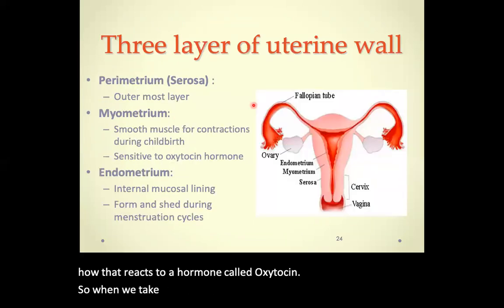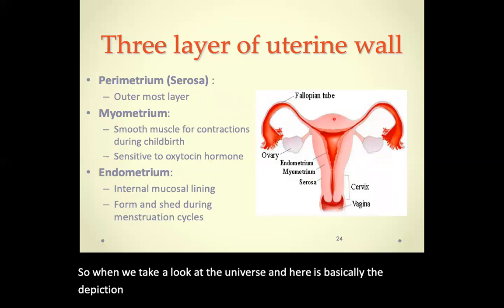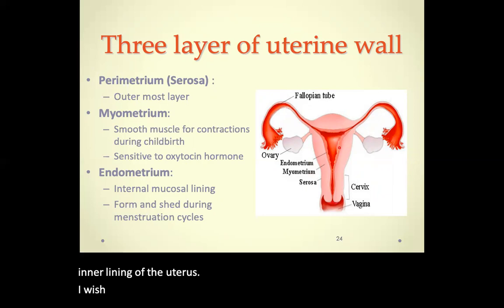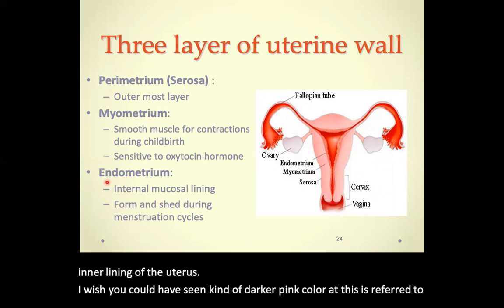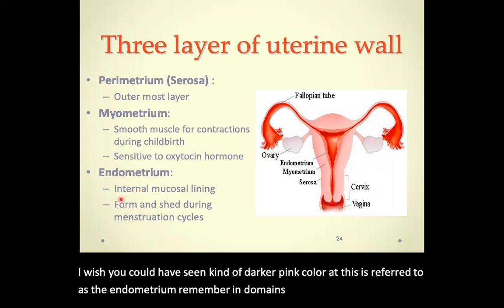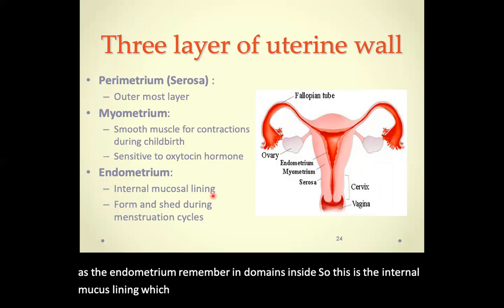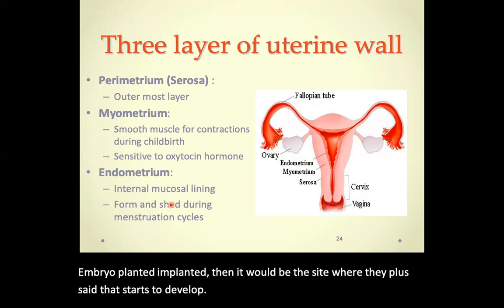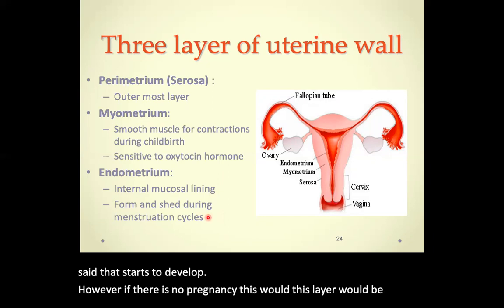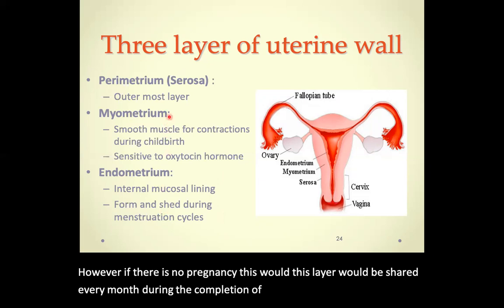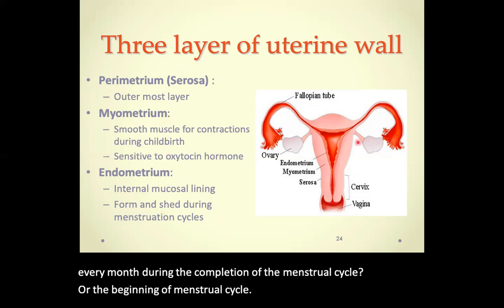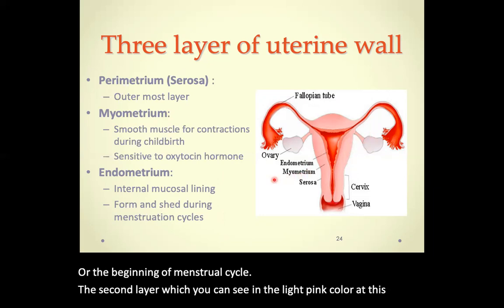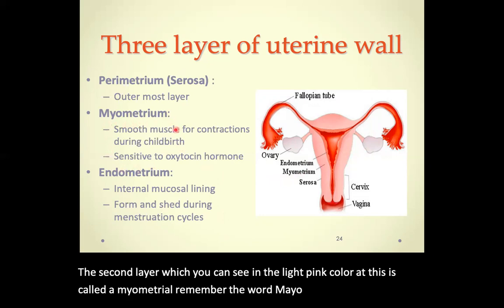Looking at the uterus, there are three separate layers. The inner lining, shown in darker pink, is referred to as the endometrium — 'endo' means inside. This is the internal mucous lining, which is highly vascularized. If an embryo is implanted, it is the site where the placenta starts to develop. If there is no pregnancy, this layer is shed every month during the menstrual cycle.